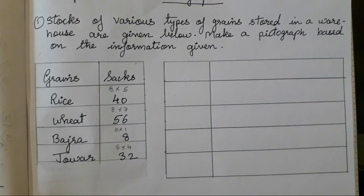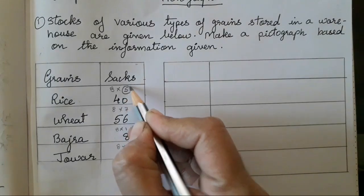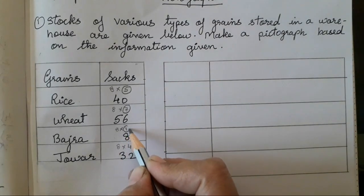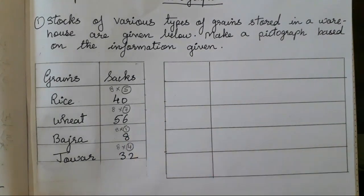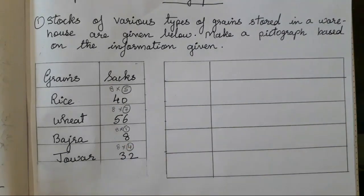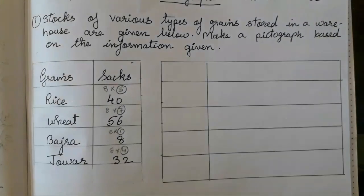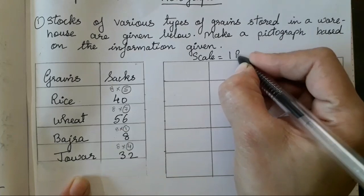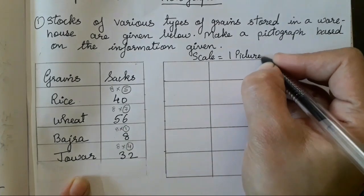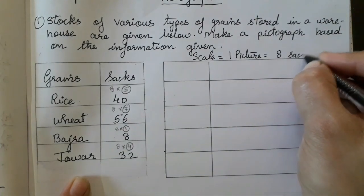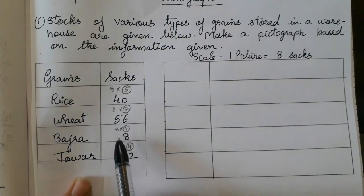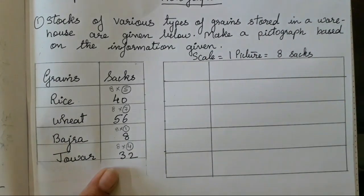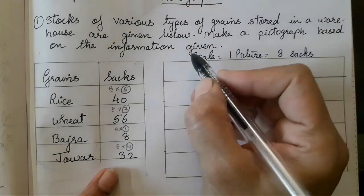So how many pictures we have to make for rice? We have to make 5 pictures for rice. Whereas for wheat, we have to make 7 pictures. For bajra, we have to make 1 picture. For jowar, we have to make 4 pictures. So we have decided what picture we have to make. Now we have to write the scale. Scale is equal to 1 picture equal to 8 sacks, because the least number is 8 — 1 one is 8. So 1 picture equals 8 sacks.